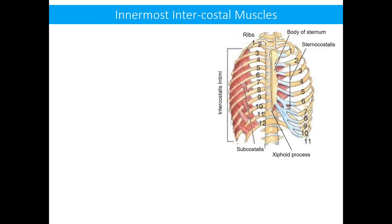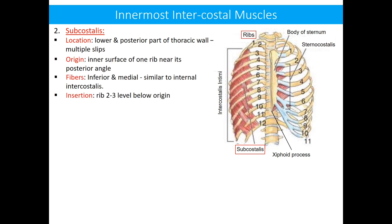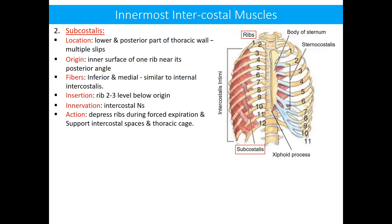The second part of the innermost intercostal muscle is the subcostalis, which is located in the lower and posterior part of the thoracic wall in the shape of multiple slips. Each slip originates from the inner surface of one rib near its posterior angle. The fibers travel inferiorly and medially, similar to the internal intercostal, and are inserted into a rib two to three levels below their origin. They are innervated by intercostal nerves and can depress ribs during forced expiration, also supporting the intercostal space contents and the thoracic cage.